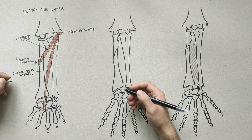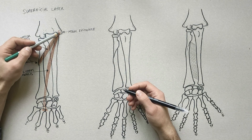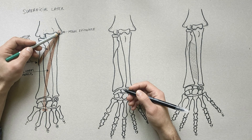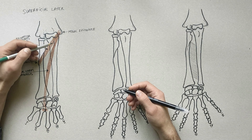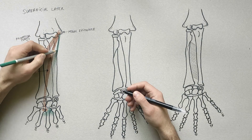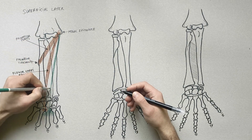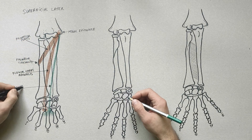The palmaris longus muscle is a slender muscle which may be absent. When present, this muscle originates from the medial epicondyle of the humerus, and its insertion is into the palmar aponeurosis.